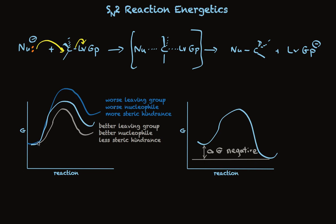So what we're saying is that, as we talk about a better leaving group, a better nucleophile, or more steric hindrance, all we're saying is that the activation energy for this rate-determining step — the only step in this reaction — is changed as a result of changes in those parameters. And so the kinetics reflect that in the rate constant term, which shows up as an activation energy change when we look at the energy diagram for the reaction. Very straightforward. In summary, we can look at the energy of the reactants and products and compare where they start and where they finish to determine whether this is an endergonic reaction.